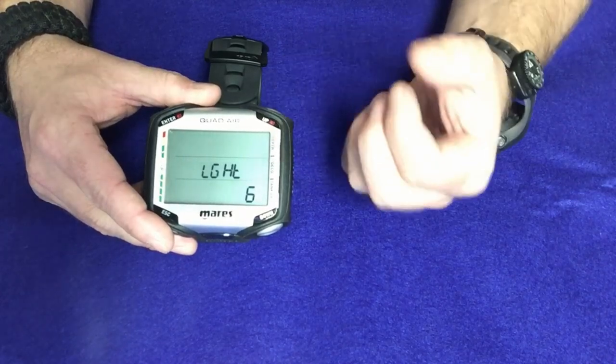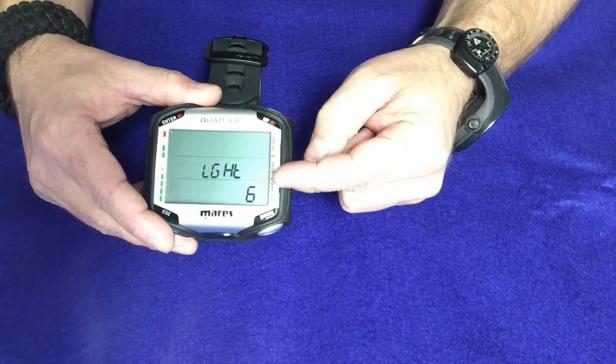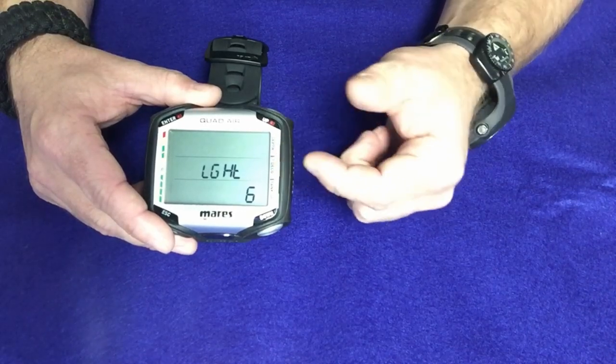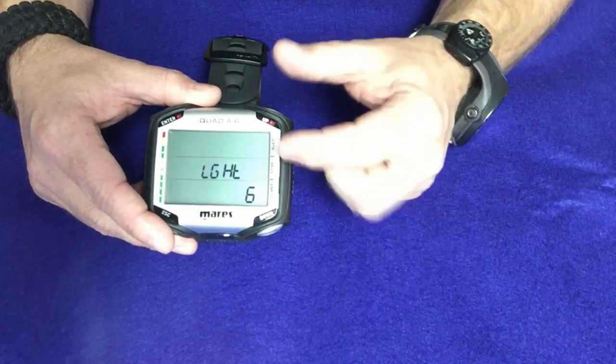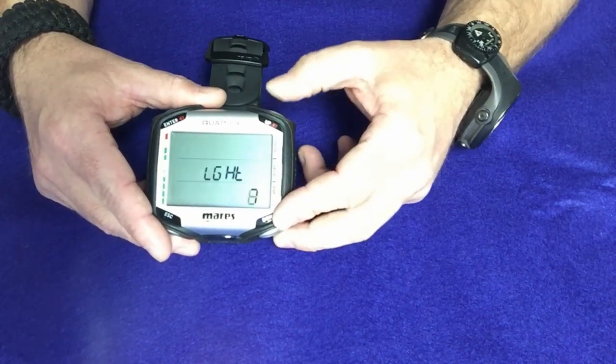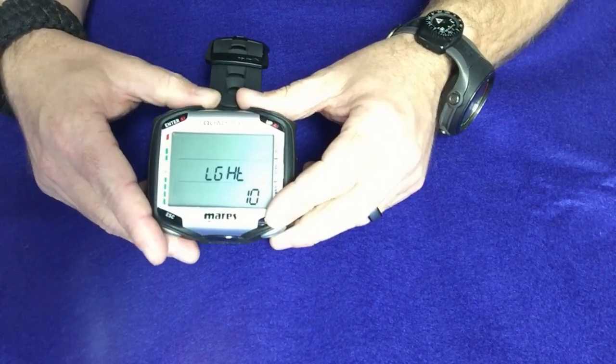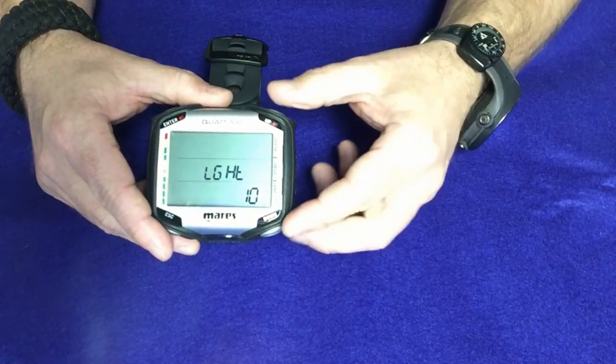Now the light mode is going to be the intensity of the backlight, and of course how long it stays on as well. It comes from the factory at a 6. I like to set it up to 10. So to change that, I'm going to simply just go to the enter button, and I can change it up to whatever number I want. So once I go up to 10, I can hit enter again, and then of course it's set.